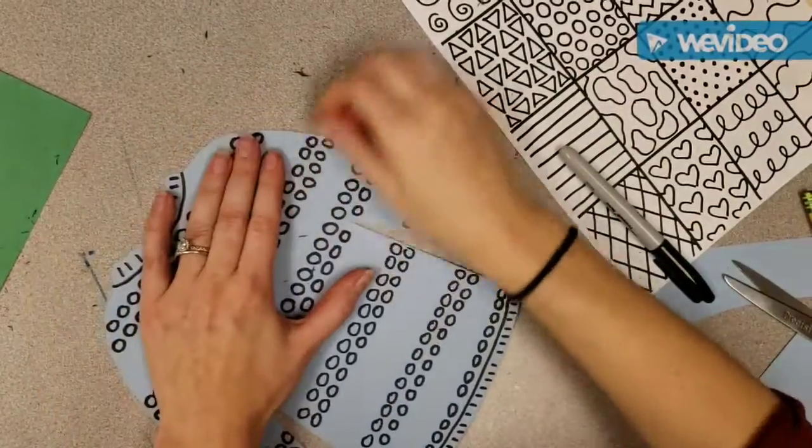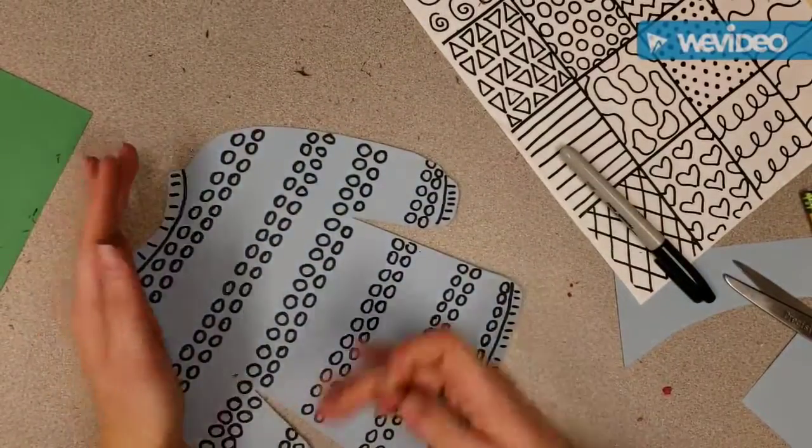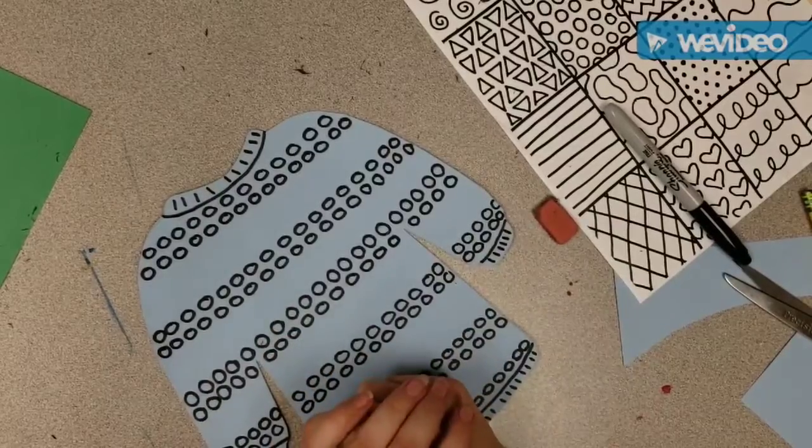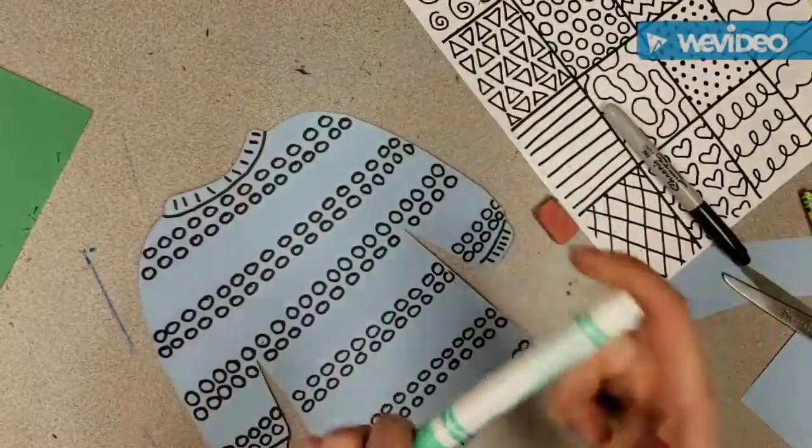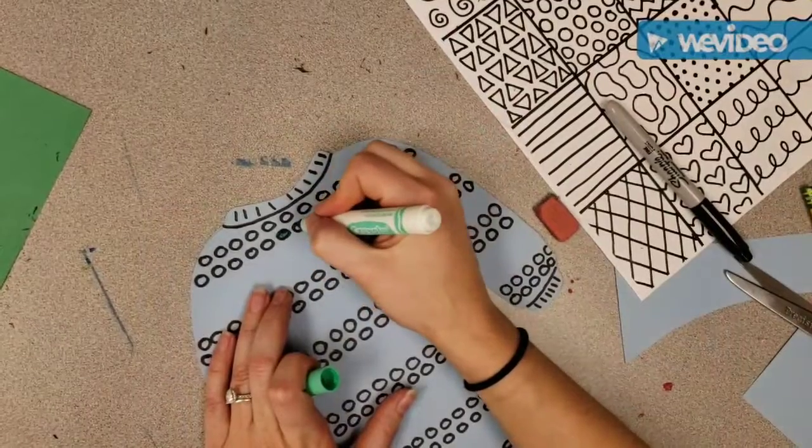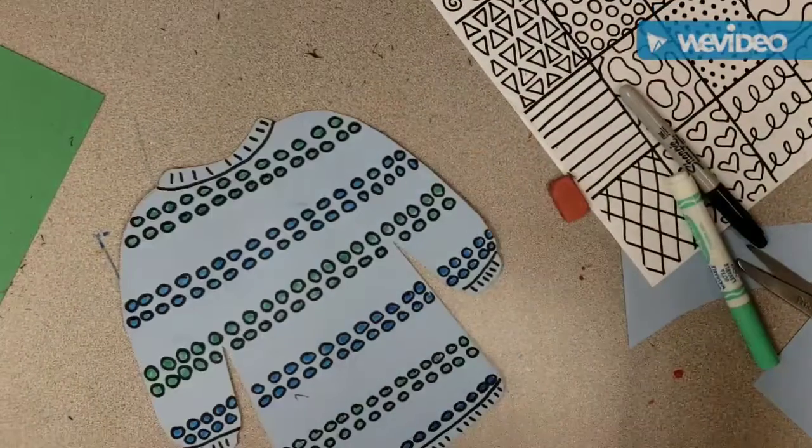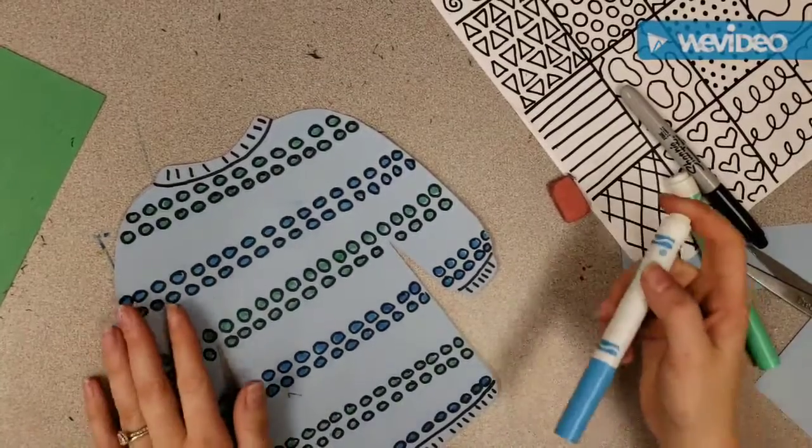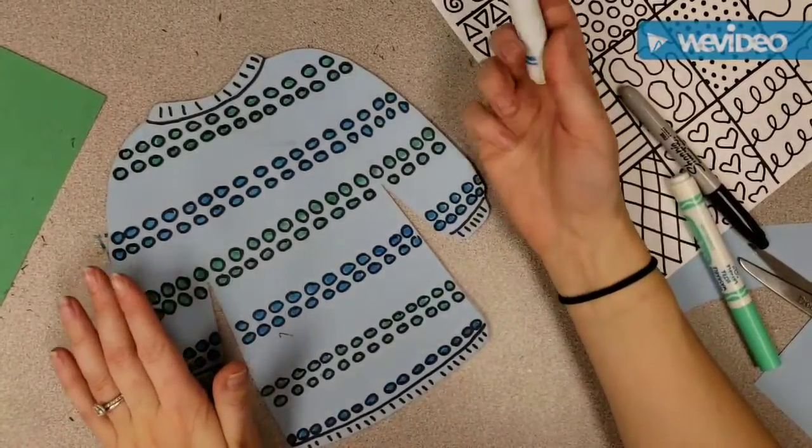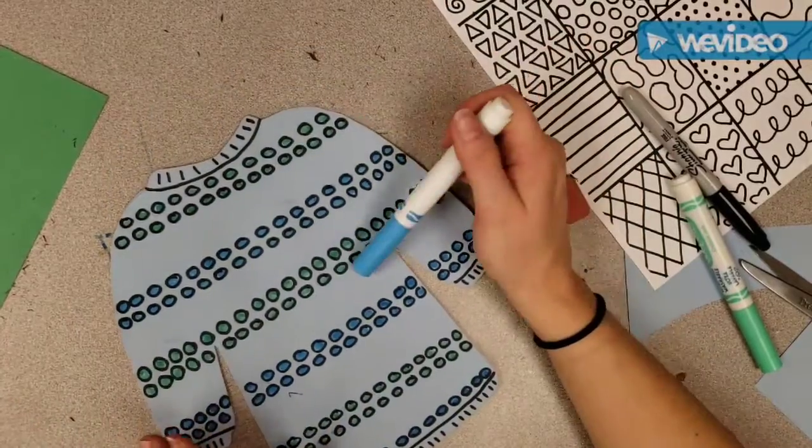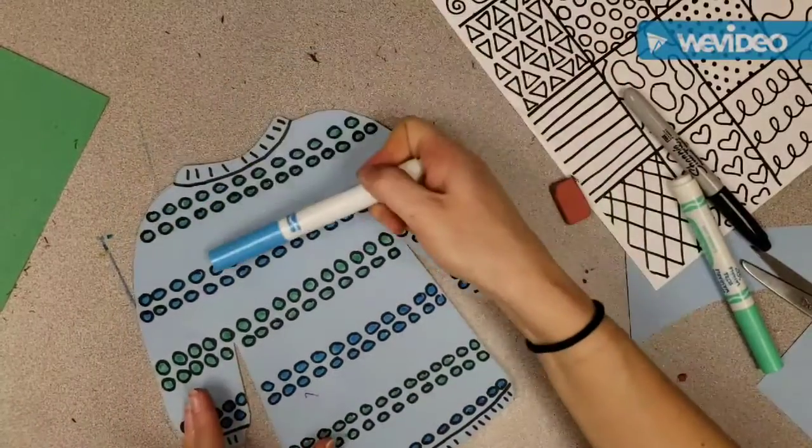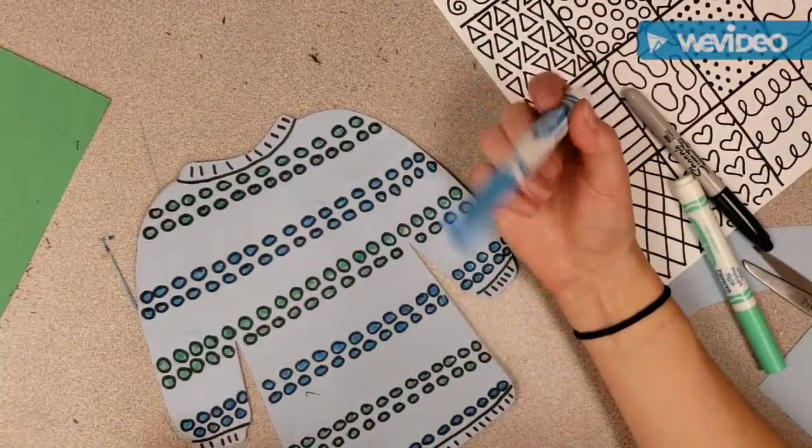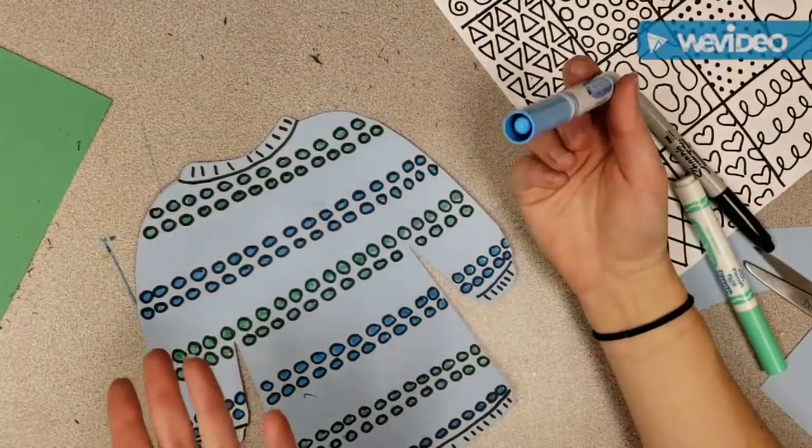Okay, once all of your erasing is done, then you can go ahead and get markers to decorate your sweater. I think I'm going to use green to color in my dots. Another fun thing that you could do with your markers is to take the colors and make a pattern out of them. I did that with my sweater by doing green dots, then blue dots and repeating that. Because remember, a pattern is a line, shape or color that repeats.